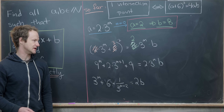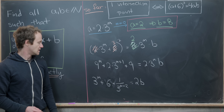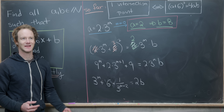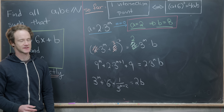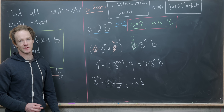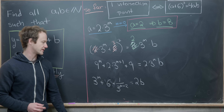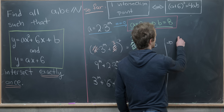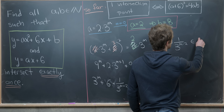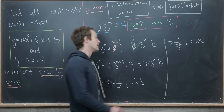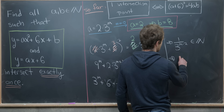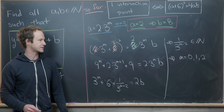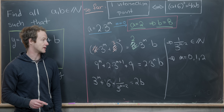Dividing both sides by 3^m gives 3^m + 6 + 9/3^(m−2) ... more precisely, 3^m + 6 + 1/3^(m−2) = 2b. For the left side to be a natural number, 1/3^(m−2) must be a natural number, which requires m ≤ 2. So m can only equal 0, 1, or 2.